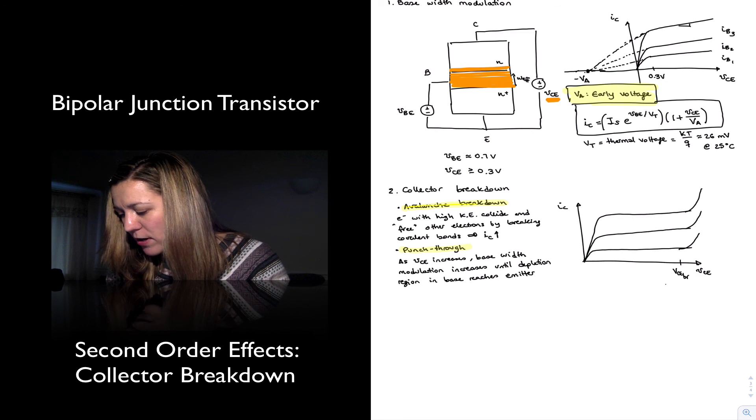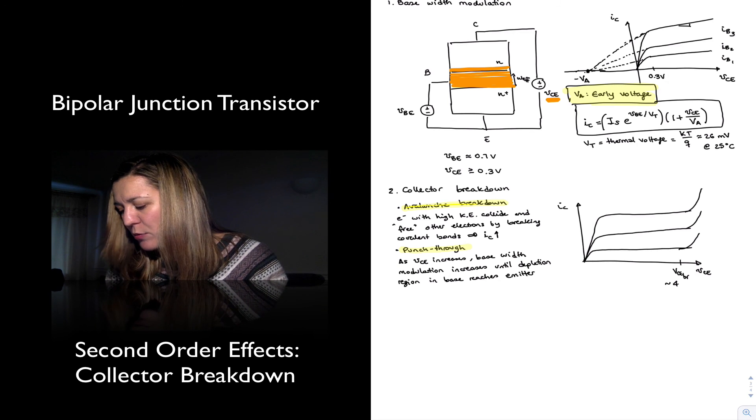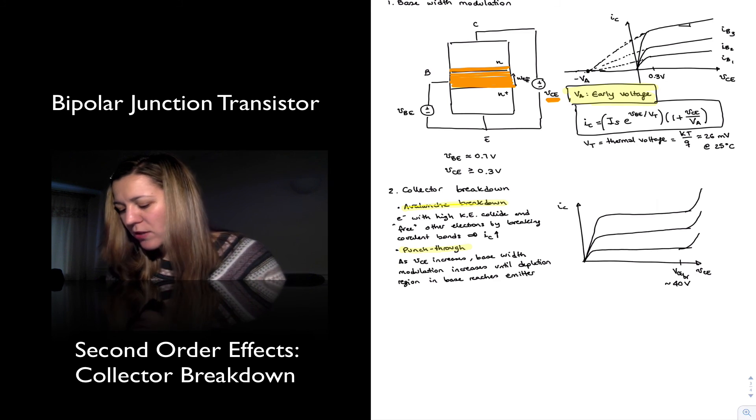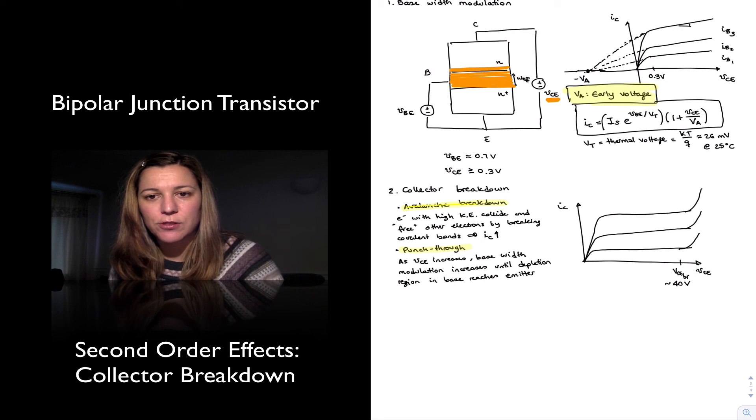Something that I mentioned, but I probably should write, is that for a general-purpose small signal NPN transistor, that breakdown voltage is about 40 volts.